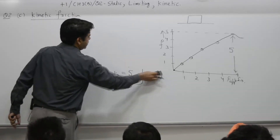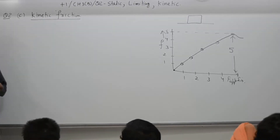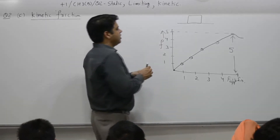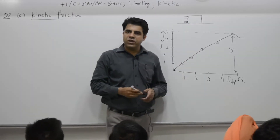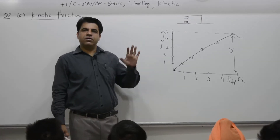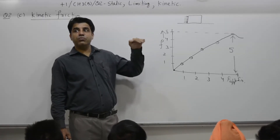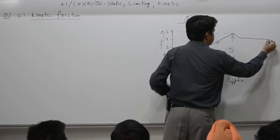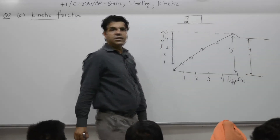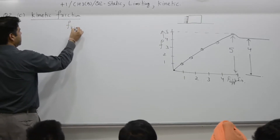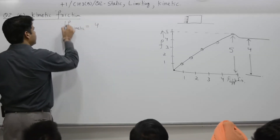So kinetic means 'in motion.' Force applied was 1 — no motion; 2 — no motion; 3 — no motion; 4 — no motion; 5 — the object just starts moving. And even if you decrease the force after that, the object will continue to move. The reason is that once the object is set in motion, the opposition decreases. There is now relative motion between the two surfaces, and the friction is now only 4 units.